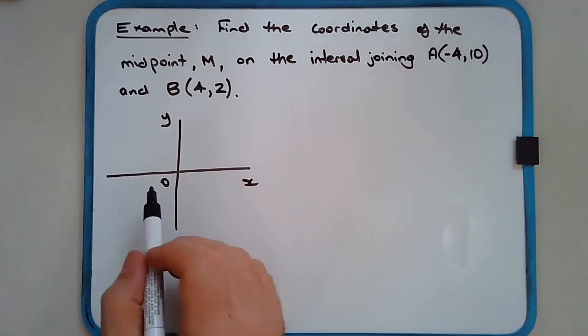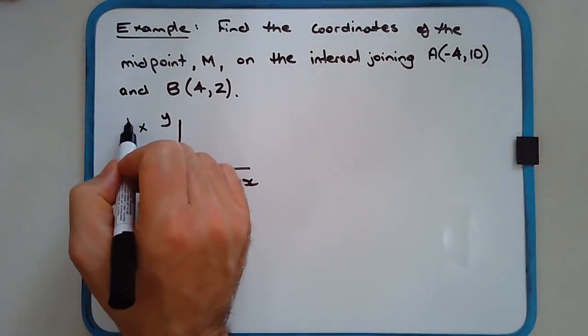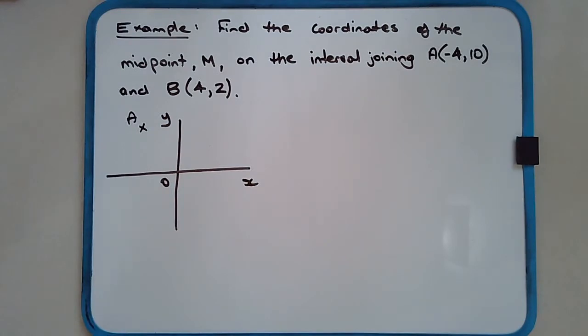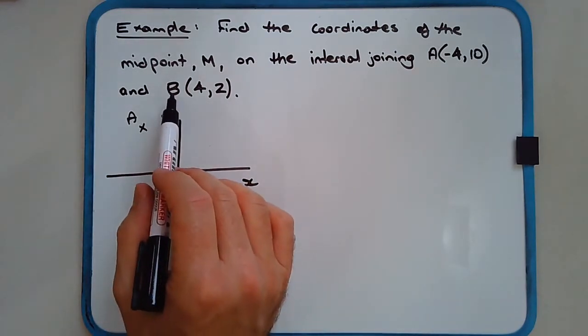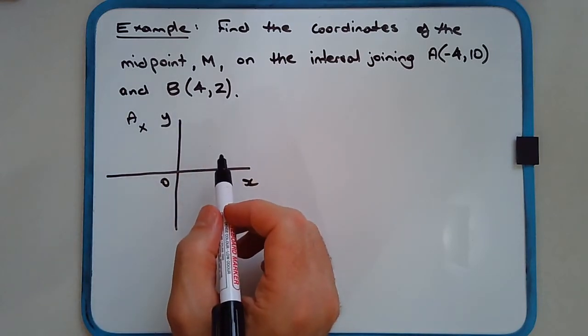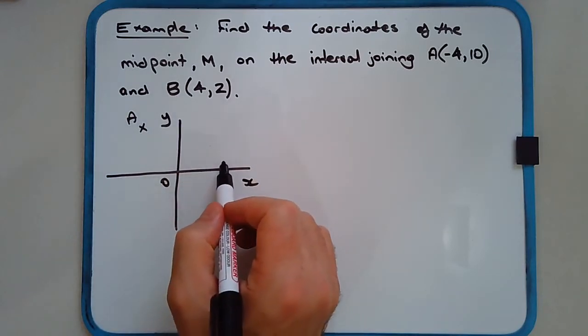So A is (-4, 10), so it's probably somewhere here, up there somewhere in quadrant 2, and B is (4, 2), so maybe somewhere here.